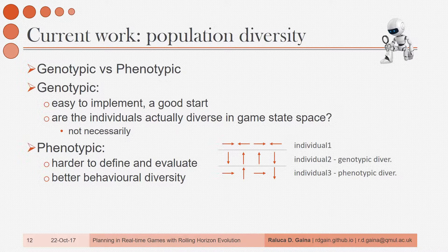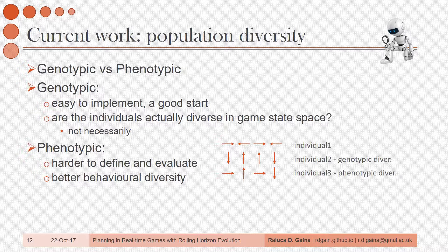For example, let's take three individuals. If we look at the first two, they are very different to each other — they contain completely different actions and don't respect the same sequence structure either. But if the agent performs either one of those sequences, it will end up in the exact same place where it started. So this doesn't give much in terms of diversity. If we look at the third individual, it's not so different in terms of genes — it copies them alternatively from the other two. When the agent performs this sequence, however, it will end up two spaces to the right, and that's a lot better. Finding genotypic diversity is more challenging.